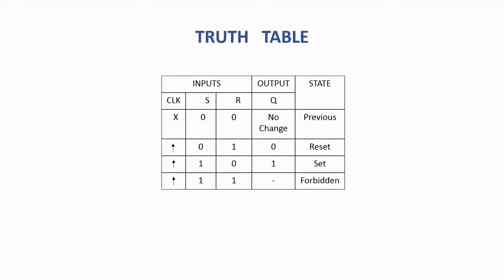The truth table of the SR flip-flop is given below. When clock is active and S is 0 and R is 0, the output Q will be no change, that is the previous state. When S is 0 and R is 1, the output Q is 0, that is the reset condition. When S becomes 1 and R becomes 0, the output becomes 1, that is the set condition. When both inputs S and R are equal to 1, the flip-flop state will be forbidden.